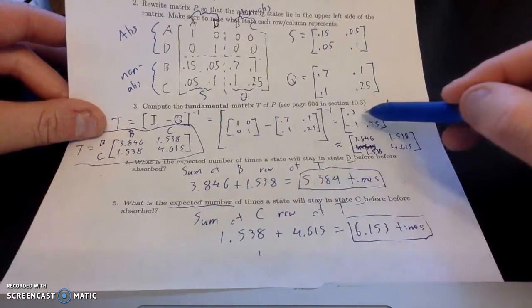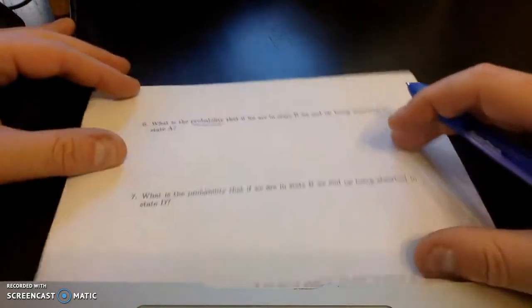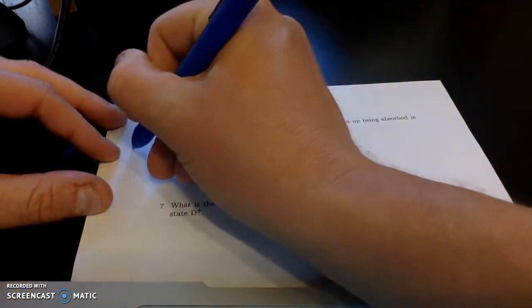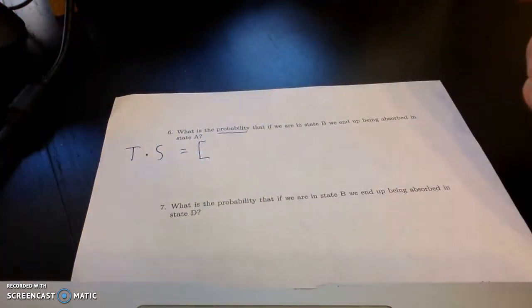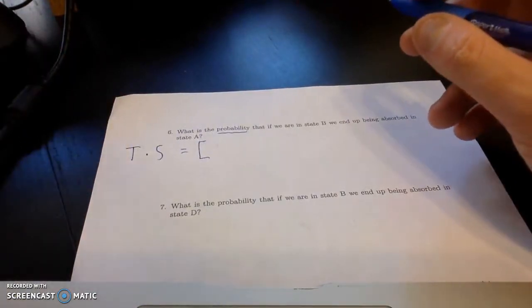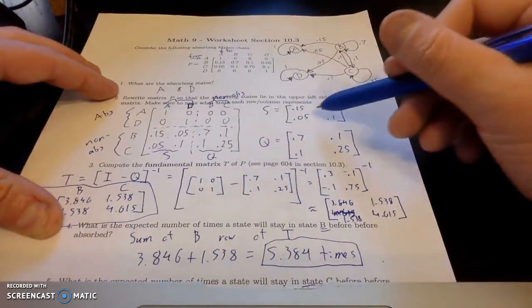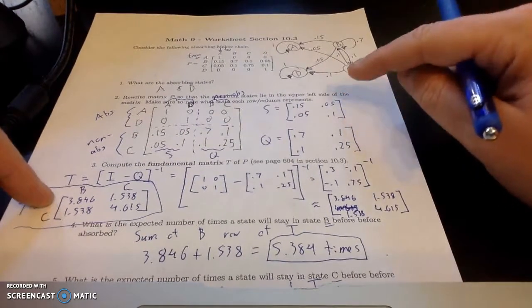so this one we need to compute another matrix to find probability. And again, I highly suggest this is summarized very well in the chapter. So I'm referencing 10.3 in the 600s. And to compute this value, I'm going to compute the matrix, be careful here, T times S. So if we're looking at that, the matrix T on the other side is this fundamental matrix. And S is this matrix right here. Again, this is not a 5, this is an S. So I'm going to multiply these two matrices together.